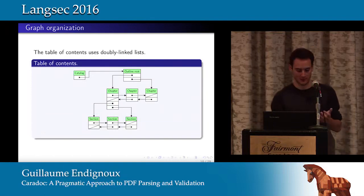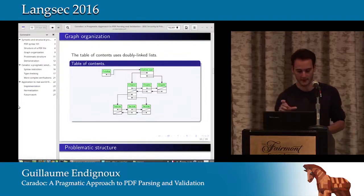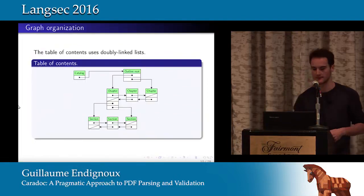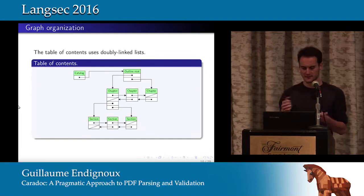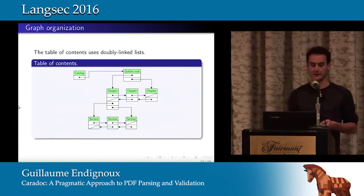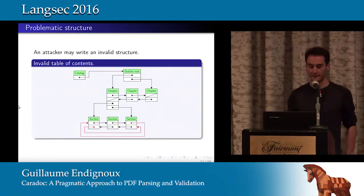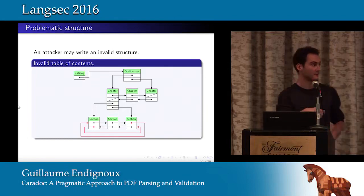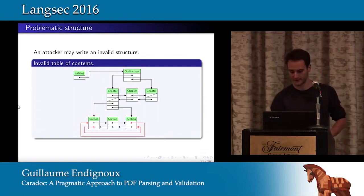There is also a table of contents organized as a tree, where the children of each node are organized as a linked list. This is a problem for parsing because an attacker can write an invalid structure with loops inside the linked structure. Actual parsers often don't check for that.